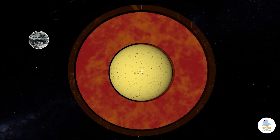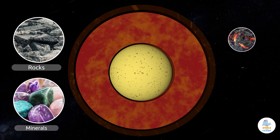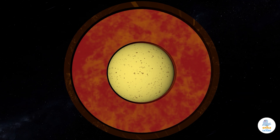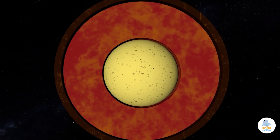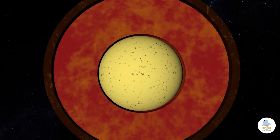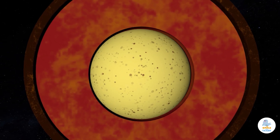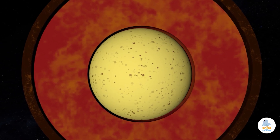The Geosphere is made up of rocks, minerals, magma, and sand. The closer we get to the inner core, temperature, density, and pressure progressively increase.